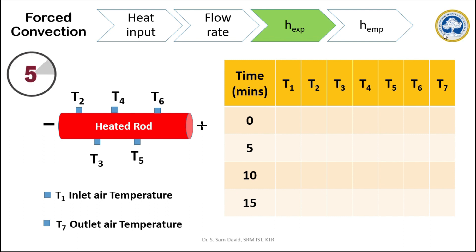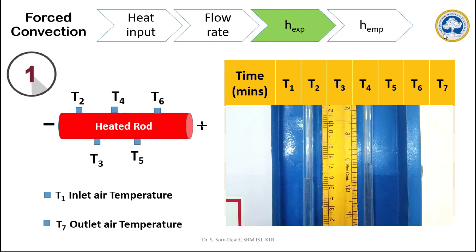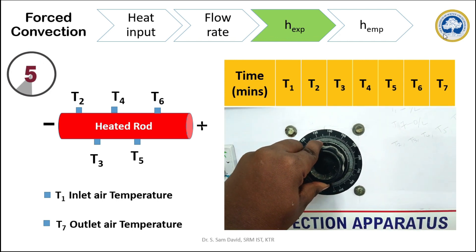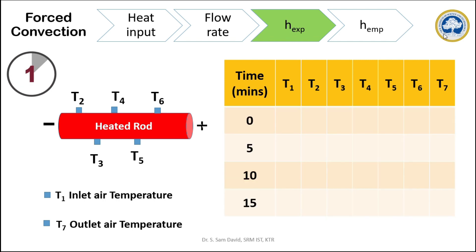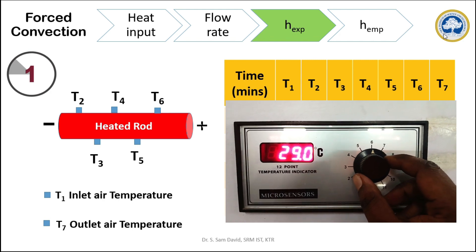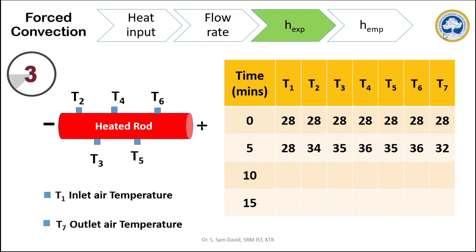T2 to T6 are the thermocouples fitted at the heater rod. In a typical experiment the blower and heater are switched on. By noting down the manometer value we can calculate the flow rate. By adjusting the knob we can apply the required potential across the heater rod. The heater rod will start heating up and after some time will reach a steady state temperature. To confirm steady state we must monitor the temperature over time, taking thermocouple readings from the moment heat input starts. By rotating the knob we can change the thermocouple channel and read it from the digital display. After giving the heat input, readings are taken at the 0th minute for all thermocouples, then we wait five minutes for the next set.